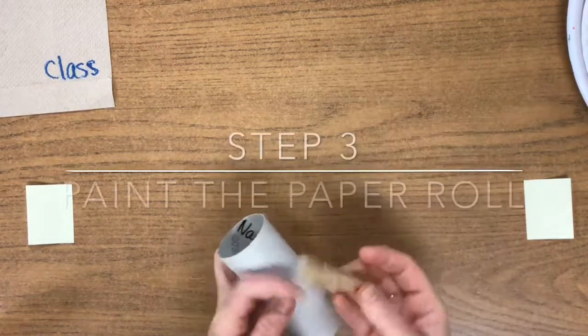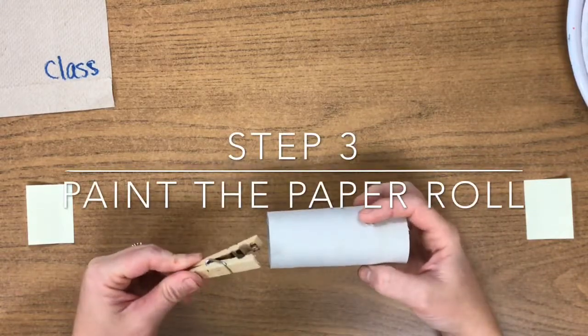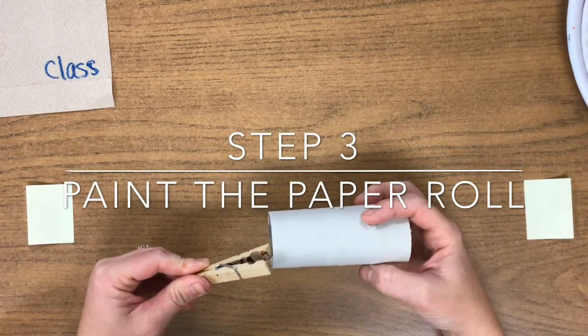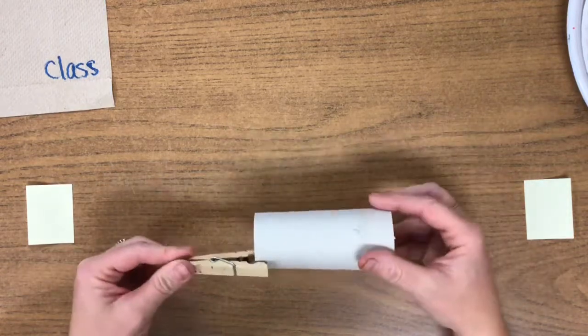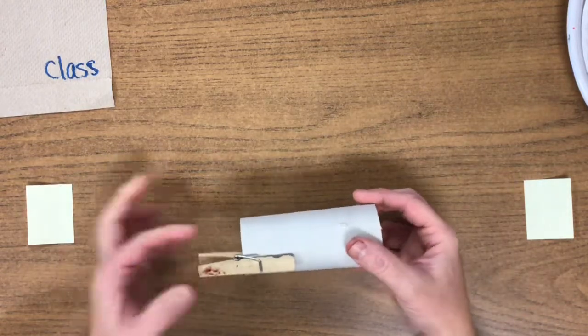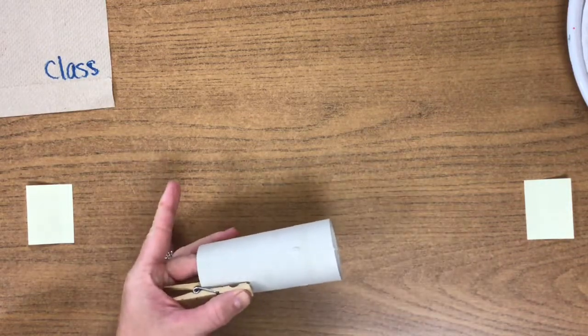Next thing you're going to do is take a clothespin to be able to prevent you getting paint all over your fingers. If you put the clothespin right there, it's still kind of wobbly. But if you go all the way and then don't hold it back here, hold it on the inside like that.